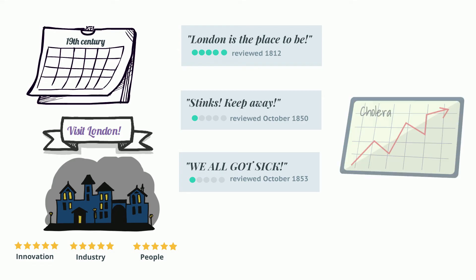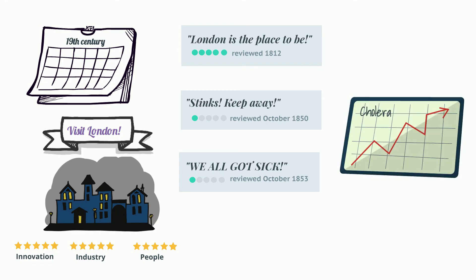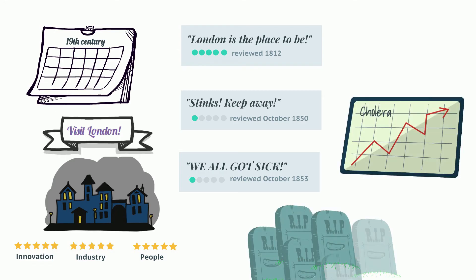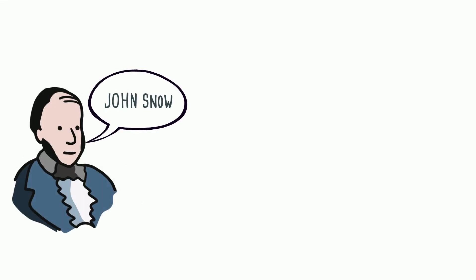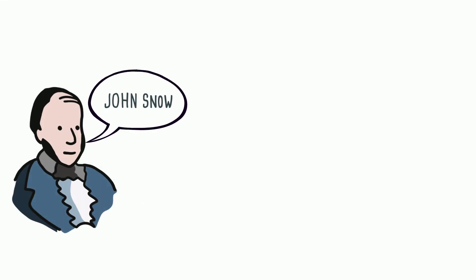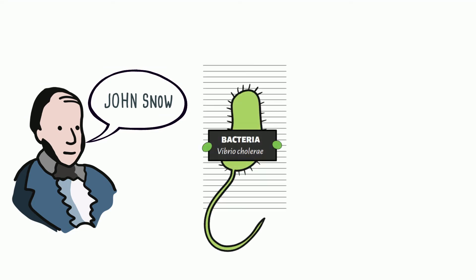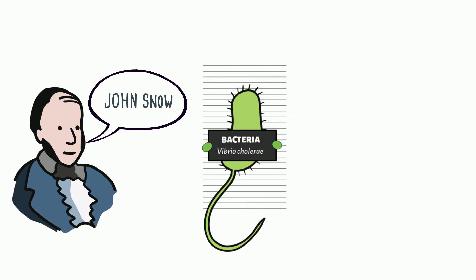There were large outbreaks of cholera that led to the deaths of thousands of people. Enter John Snow — not the King of the North, but a young physician trained as an anesthetist. Although we now know that cholera is caused by a bacterium, at the time the existing idea was that it was caused by bad air from rotting material: the miasma theory.